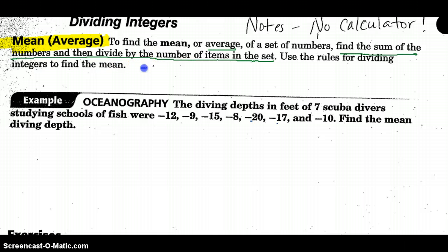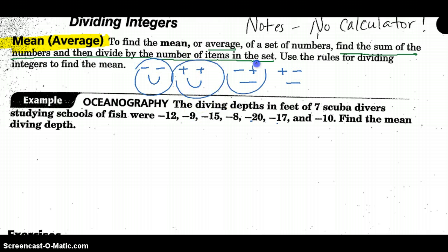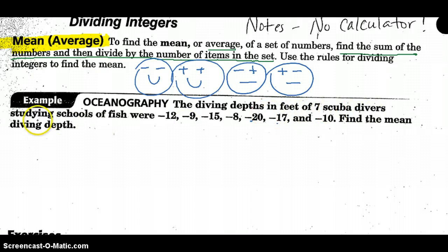Those are the rules for dividing: if they're the same sign — either happy or asleep — they're going to be positive; opposite signs will be negative. The same applies for finding the average. We have an oceanography problem: the diving depths in feet for seven scuba divers studying schools of fish were listed — find the mean diving depth.